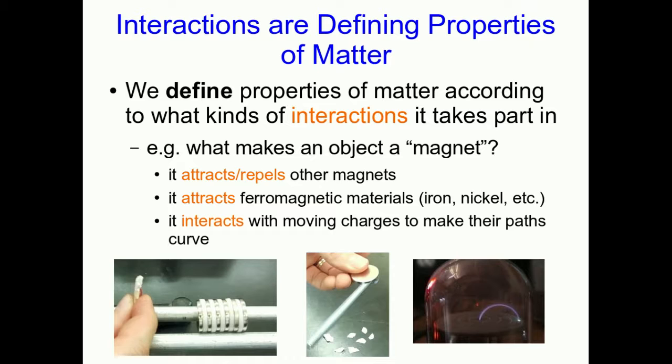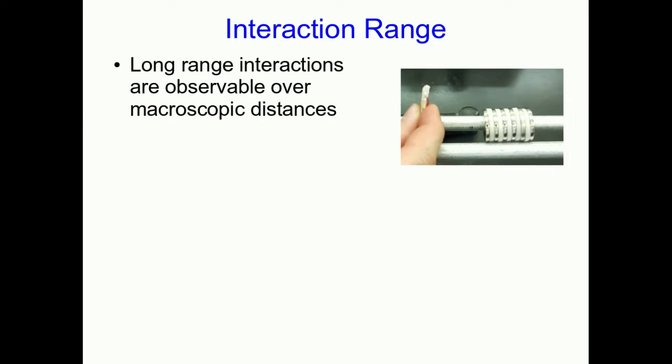And this goes for all sorts of other properties of matter. If you want to know whether something is charged, you look at the electrical interactions that it participates in. If you want to know whether something has mass, and this time I really do mean mass, not inertia, you look at its gravitational interaction with things.